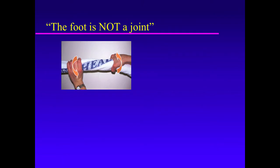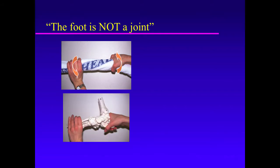Take this analogy of wringing out the water in a towel — turning our hands in opposite rotational directions. Consider then taking this foot model on bungee cords and wringing it out by pronating the forefoot and inverting the hindfoot into varus. This combination of opposite rotational deformities is a cable varus foot.